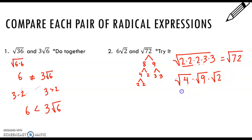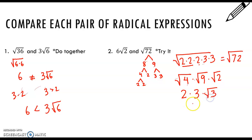The square root of 4 is 2, the square root of 9 is 3, and the square root of 2 is just the square root of 2. So 2 times 3 is 6.